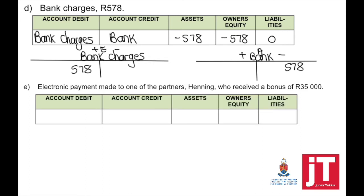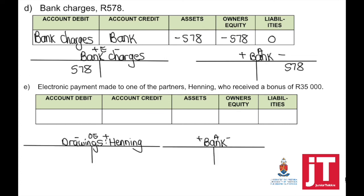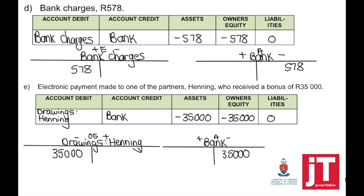Adjustment E — an electronic payment made to one of the partners, Henning, who received a bonus of $55,000. Remember that a partner, from the primary distributions of profits, is entitled to a salary, a bonus, and interest on capital. If a partner receives his monthly salary or bonus, bank and drawings are involved. It is very important to write the name of the partner. Account credited: bank. Account debited: drawings. Effect on the accounting equation: assets minus, because a payment was made; owner's equity minus.